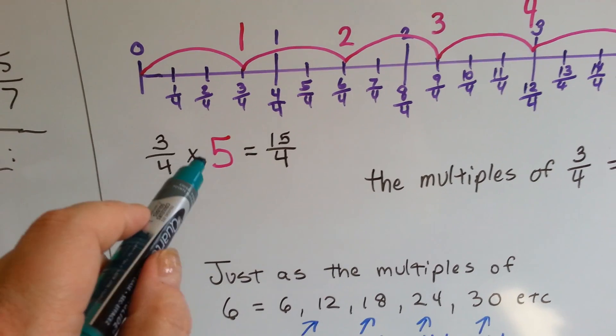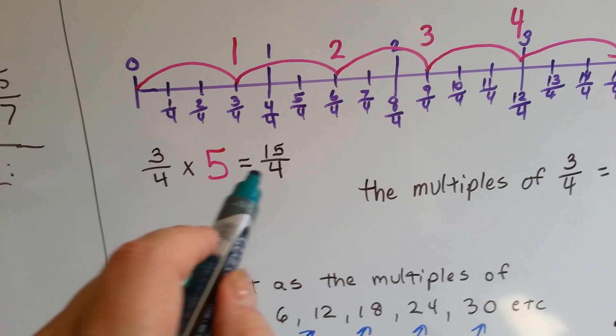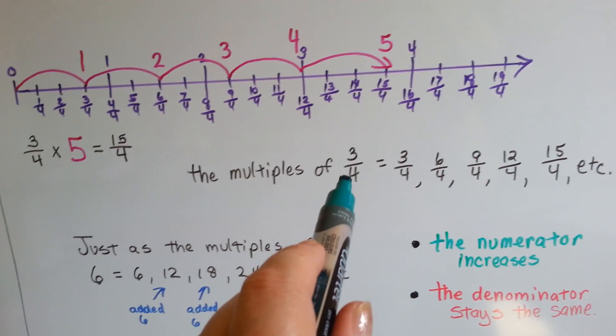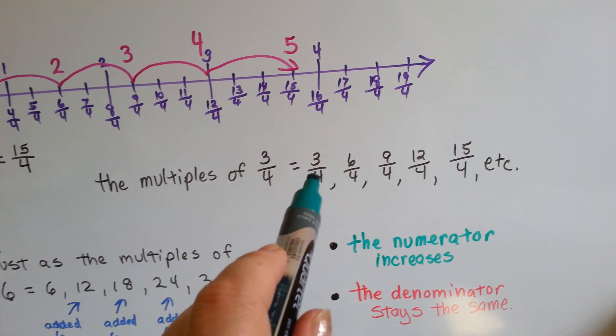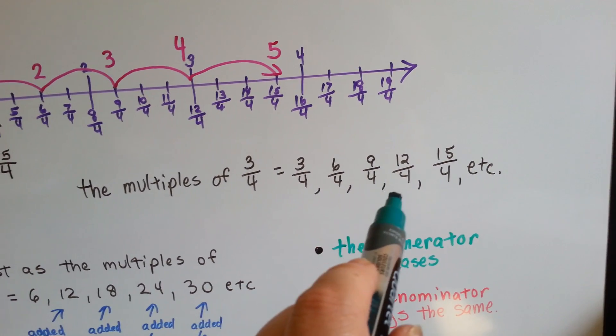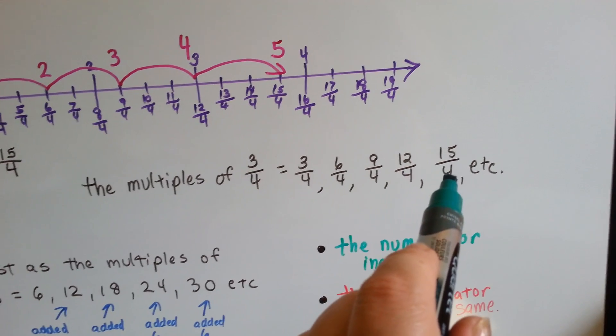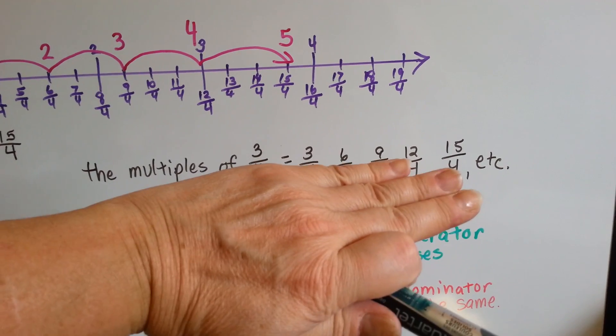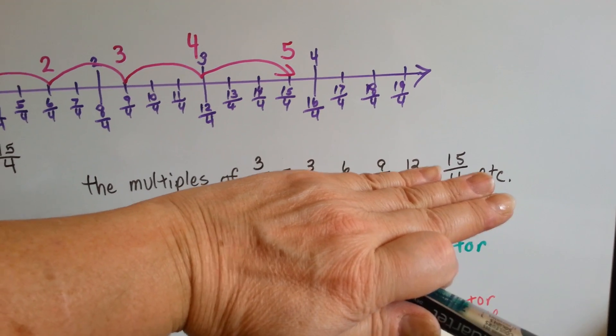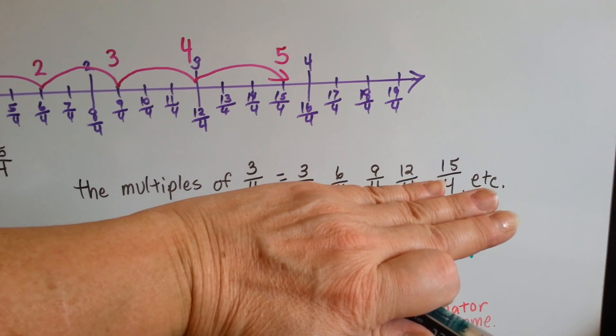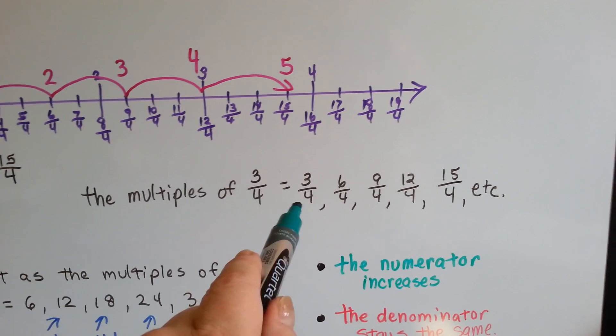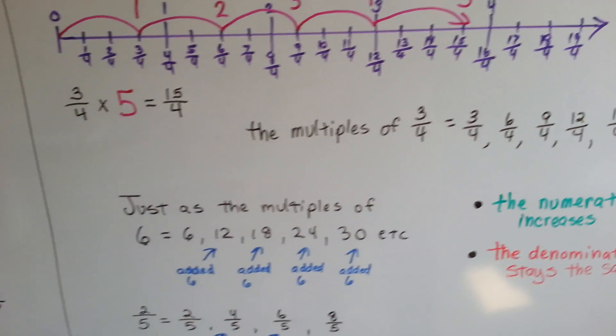If you look, 3 times 5 is 15, and the denominator was just moved over. The multiples of 3 fourths would be 3 fourths, 6 fourths, 9 fourths, 12 fourths, and 15 fourths. It's almost like the multiples of 3, and we don't have the fourths underneath there. 3, 6, 9, 12, 15 are the multiples of the whole number 3. Because it's got a denominator of 4, we put the denominator down there and it doesn't change.